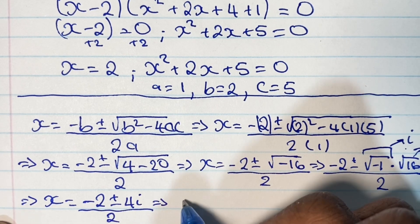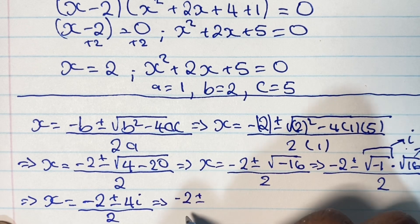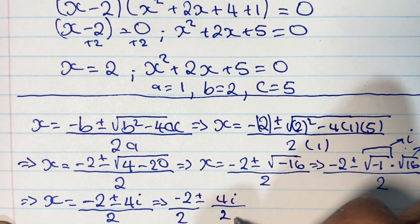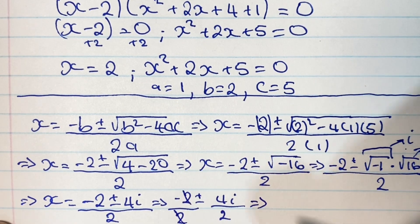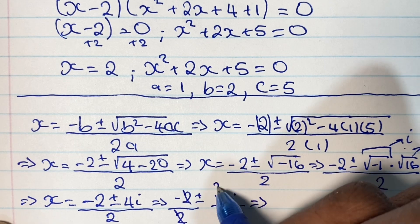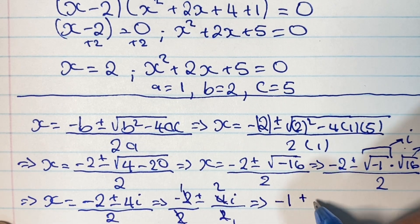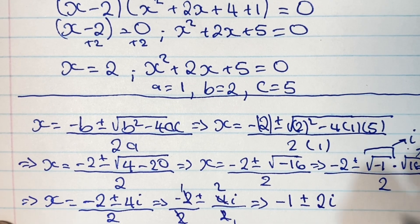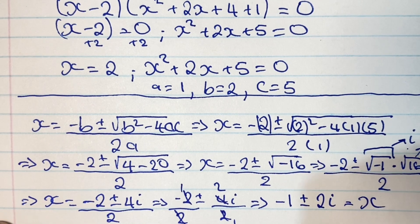We can simplify further by splitting the fraction: negative 2 over 2 plus or minus 4i over 2. Dividing gives us negative 1 plus or minus 2i. So our complex solutions are x equals negative 1 plus 2i and x equals negative 1 minus 2i.